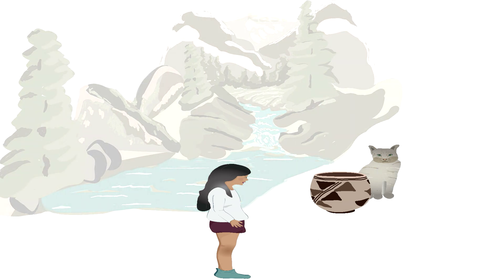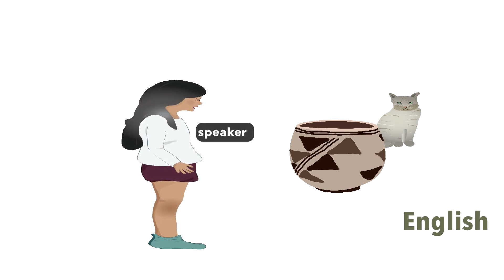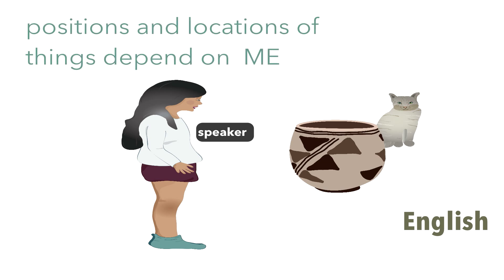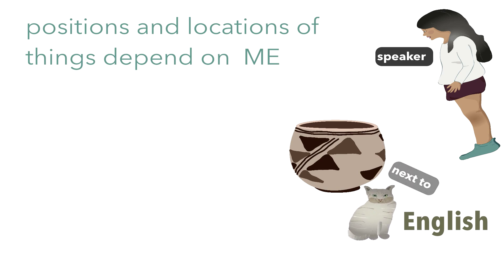English and Yurok have fundamentally different systems for talking about how things are located in space. For a speaker of English, locations of objects are described not in terms of some fixed location, but relative to another point of reference — the speaker themselves. Since speakers' locations change all the time, the way they describe where things are changes as well. When looking at the cat from one direction they might say it's behind the clay pot, but from another direction they'll say in front of, next to, or on the right or left side of the clay pot, with rightness and leftness projected from their own body.